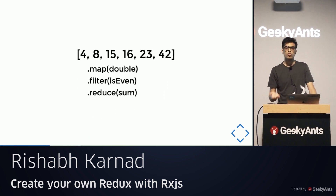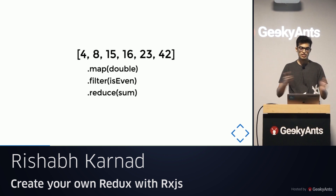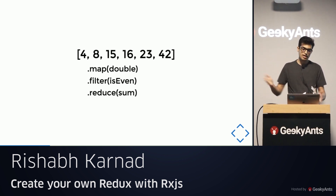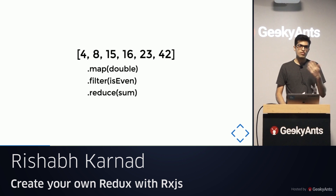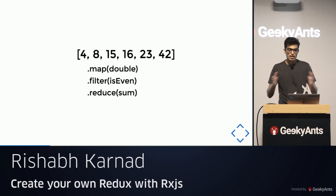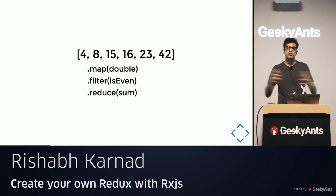You can make this even cleaner using helper functions with clearly named definitions. For example, taking an array, doubling each element, filtering out only the even numbers, and then summing it up. The point is that lists are a collection and you can use these operations to clearly convey what you want to do.